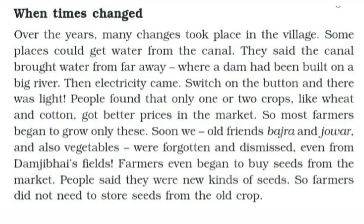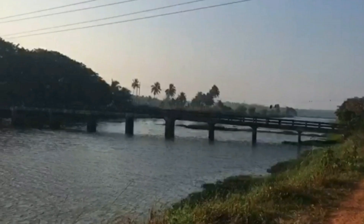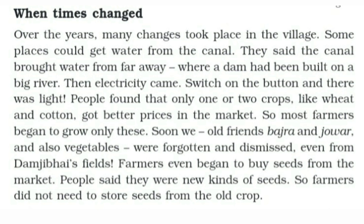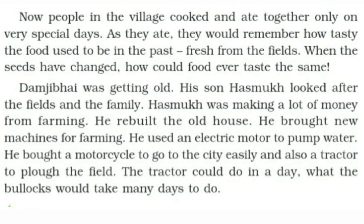'When times changed, over the years, many changes took place in the village. Some places could get water from the canal, which brought water from far away where a dam had been built on a big river. Then electricity came. People found that only one or two crops like wheat and cotton got better prices in the market, so most farmers began to grow only these. Soon, old friends — bajra, jowar, and vegetables — were forgotten and dismissed even from Damji Bai's field. Farmers even began to buy seeds from the market. Now people in the village cooked and ate together only on very special days, remembering how tasty the food used to be, fresh from the fields. When the seeds have changed, how could food ever taste the same?'